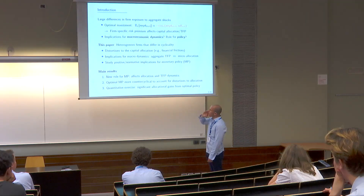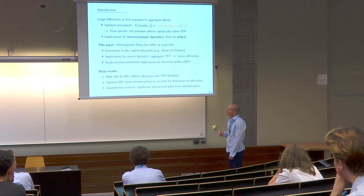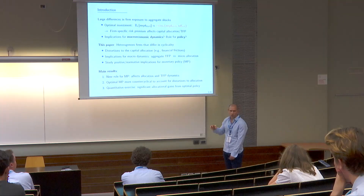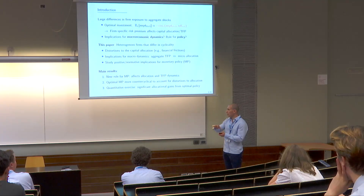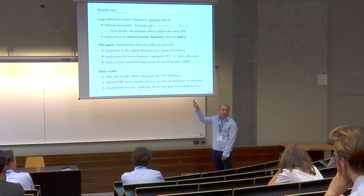For today, I'll focus on three main results. First, monetary policy will have potentially important influence on the microallocation and the dynamics of TFP. Second, optimal policy should be more counter-cyclical than in a representative firm model in order to account for potential distortions to the allocation. By more counter-cyclical I mean a counter-cyclical output gap — the central bank should be shaving off the top of expansions and the bottom of recessions — which corresponds to a more pro-cyclical nominal rate.